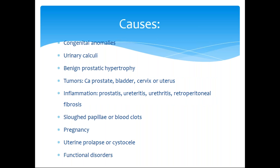There are plenty of causes. All the causes should be divided into congenital, inflammatory, and acquired. Congenital anomalies, urinary calculi as we discussed earlier, benign prostatic hypertrophy, tumors — carcinoma of prostate, bladder, cervix or uterus. Inflammations including prostatitis, ureteritis, urethritis. Retroperitoneal fibrosis, sloughed papillae or blood clots, pregnancy, uterine prolapse or cystoceles, and functional disorders.